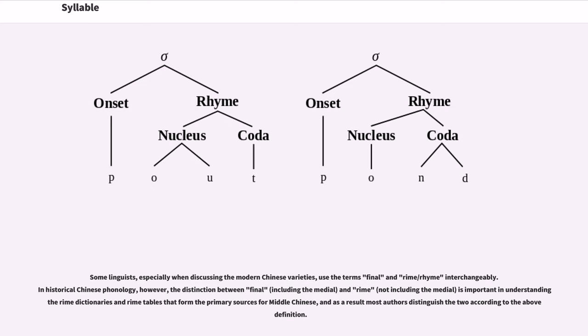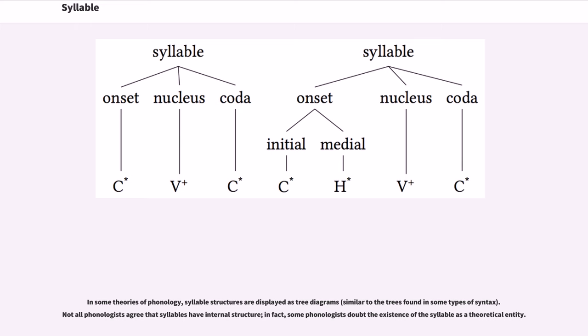Some linguists, especially when discussing the modern Chinese varieties, use the terms final and rhyme interchangeably. In historical Chinese phonology, however, the distinction between final and rhyme is important in understanding the rhyme dictionaries and rhyme tables that form the primary sources for Middle Chinese, and as a result most authors distinguish the two according to the above definition.